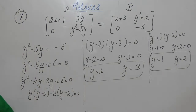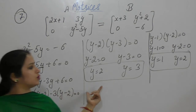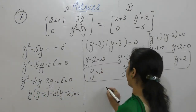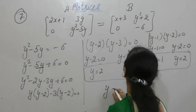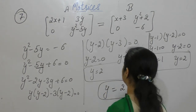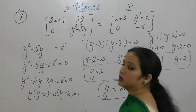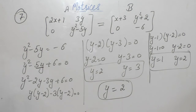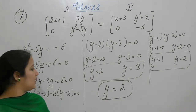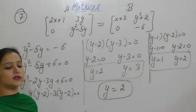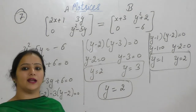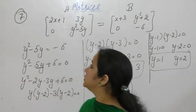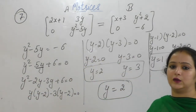From the first equation y = 1 or y = 2, and from the second y = 2 or y = 3. The common value is y = 2. Therefore x = 2 and y = 2 are the values for which these two matrices are equal.